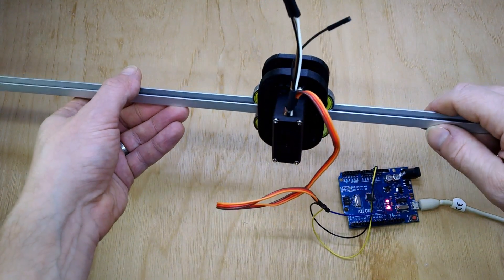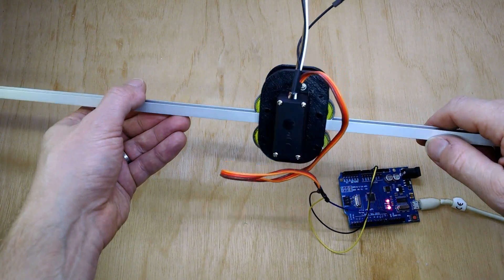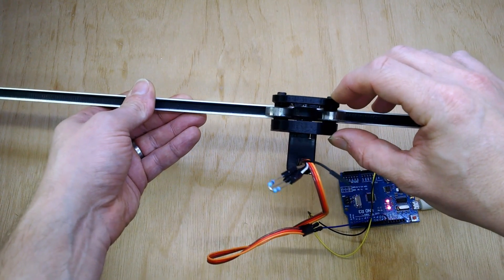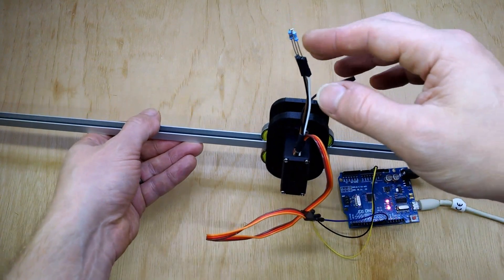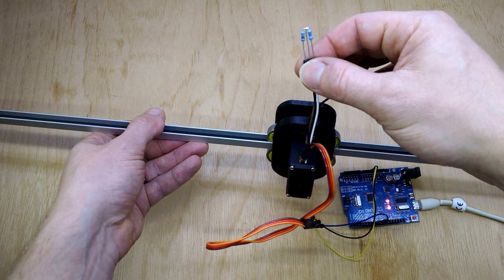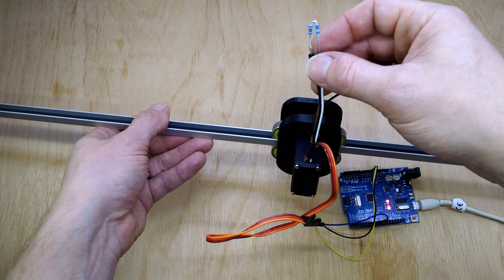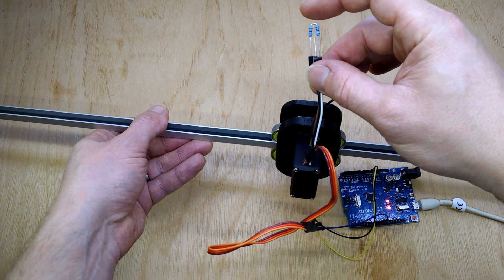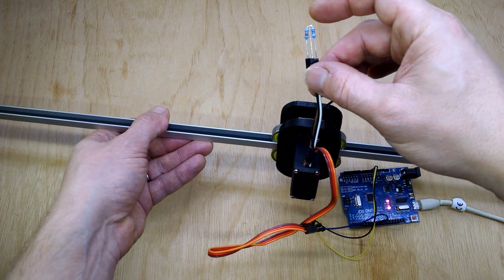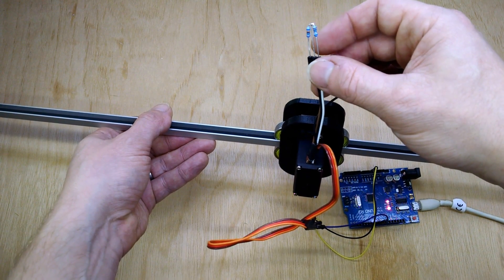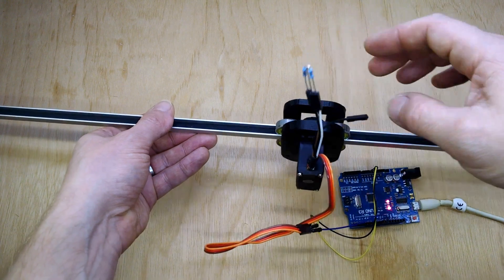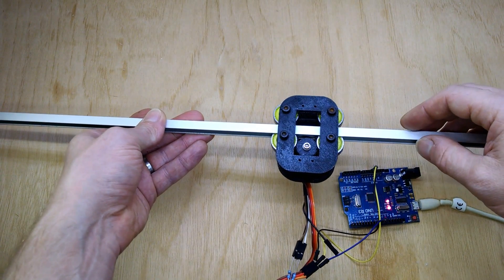You can see there the servo that's mounted on the back of one of the 3D printed plates. What I've done here is I've broken out the potentiometer from inside to a 0.1% resistor divider, and I've also removed the pin inside to allow continuous rotation of the servo.